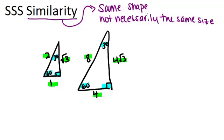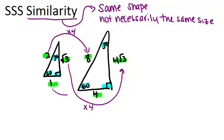So if you took any side from the smaller triangle and multiplied it by 4 you'd reach the length of its corresponding side in the larger triangle. So we could determine then that these two triangles must be similar.